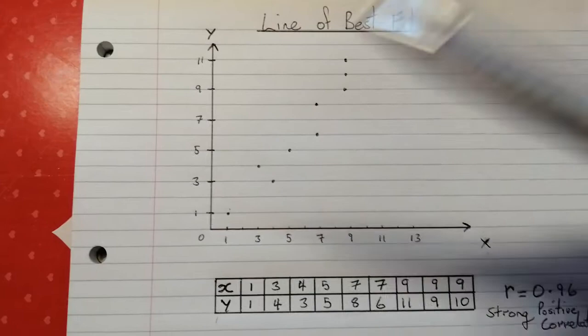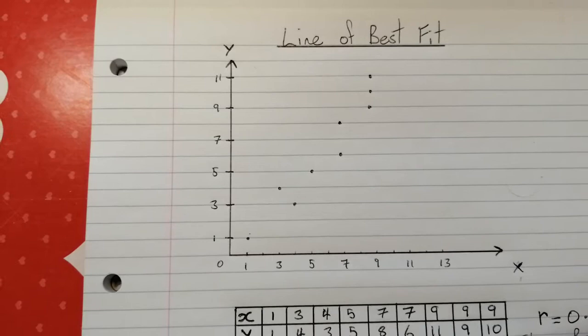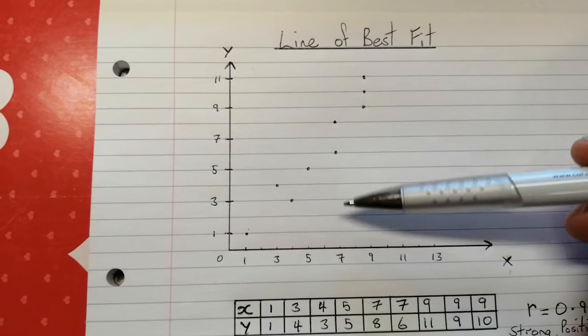So the first thing with the line of best fit to describe it: When we're going to draw this line, it's just going to be a straight line in the direction that the dots seem to be traveling, and we're going to use a ruler definitely to draw our straight line, and we're going to try to make sure that there's the same number of dots on one side of the line as there are on the other side of the line.